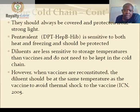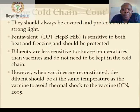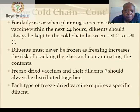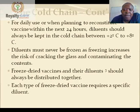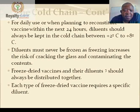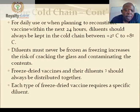Diluents are less sensitive to storage temperature than vaccines and do not need to be kept in the cold chain. However, when vaccines are reconstituted, the diluent should be at the same temperature as the vaccine to avoid thermal shock. For daily use and when planning to reconstitute vaccine within the next 24 hours, diluent should be kept in the cold chain between positive 2 to positive 8 degrees Celsius. Diluent must never be frozen as freezing increases the risk of cracking the glass and contaminating the contents.